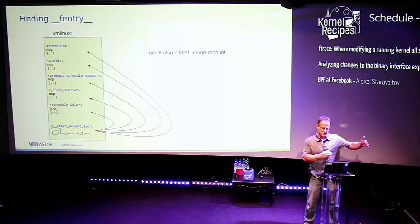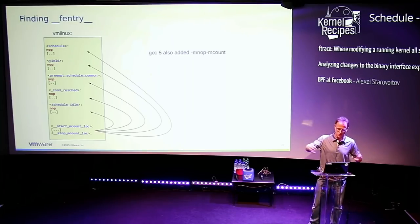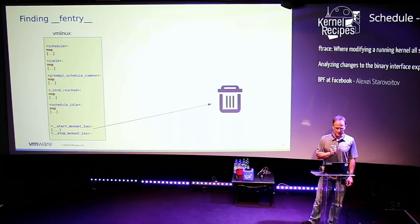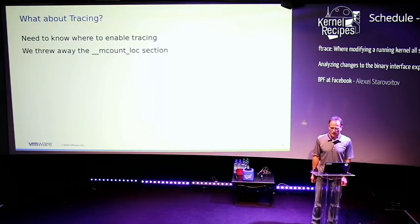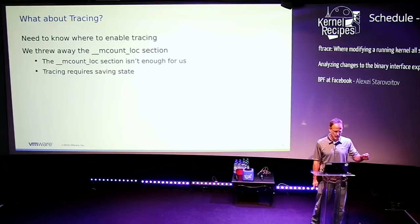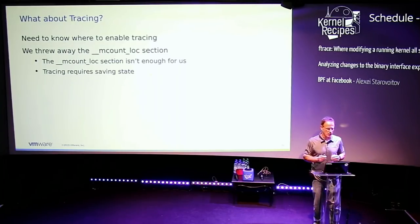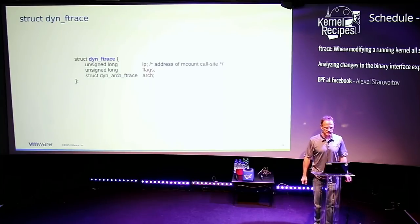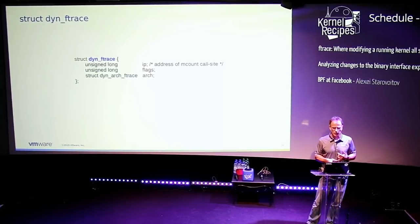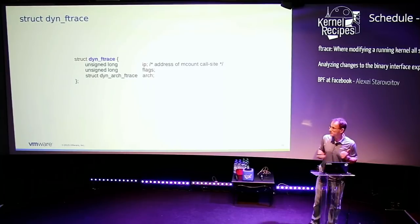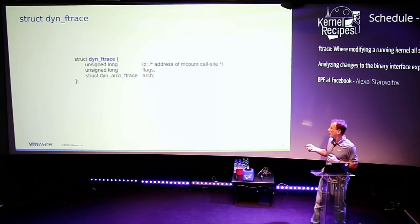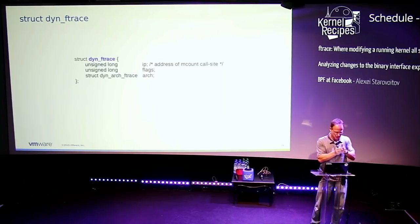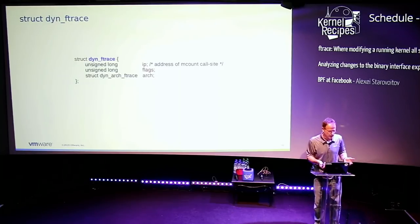Andy Kleen also added -mno-op-mcount that gives us the array and just converts to no-ops. On boot up we don't need to do this manually. But the problem is we delete that section on boot — it goes away — but we actually do need that information. mcount_loc is not enough, because we need not only the locations but the state for each location. So we create the dynamic ftrace structure that records all the addresses. Note: it should say 'fentry' not 'mcount' — that was my cut-and-paste error. This structure exists for every single function in the kernel — potentially 40,000 functions — so it must be very small. It uses two unsigned longs, which is 16 bytes total on 64-bit.